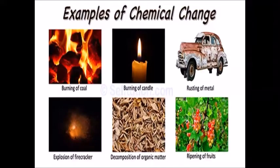Sometimes a chemical change can happen quickly, like baking and burning. Other times, a chemical change happens slowly, like rusting.